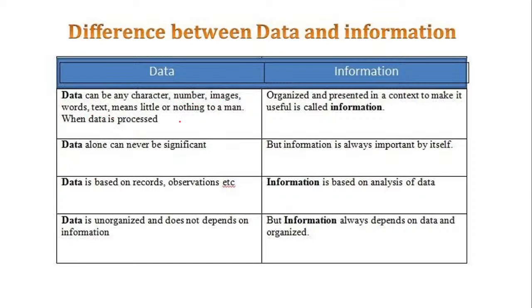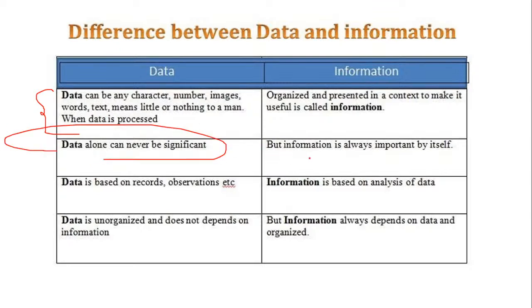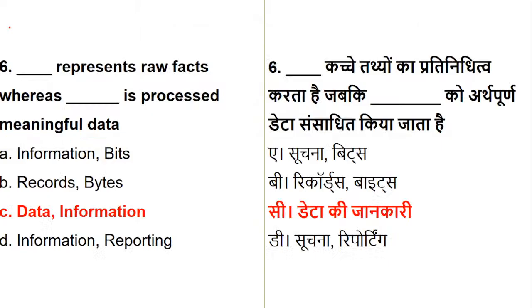Data can be any character, number, image, word, or text that has little or no meaning on its own. When data is processed, organized, and presented in a proper context, it becomes information. Data alone can never be significant on its own; it must be processed to be valuable. Data is based on records and observation, whereas information is based on analysis of data. Be careful with assertion-reasoning questions that use overlapping statements on this topic.